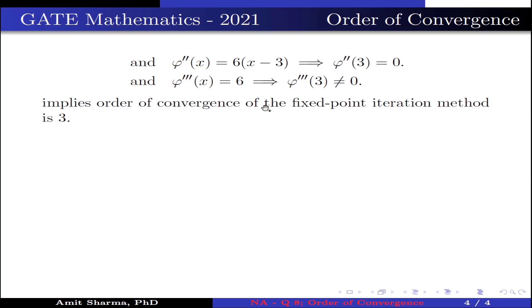This implies the order of convergence of fixed point iteration method is 3. Hence, option (C) is true.